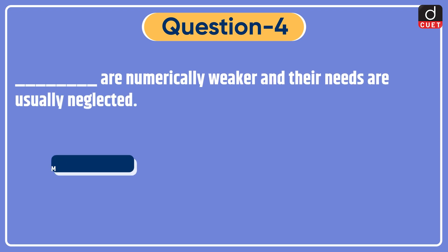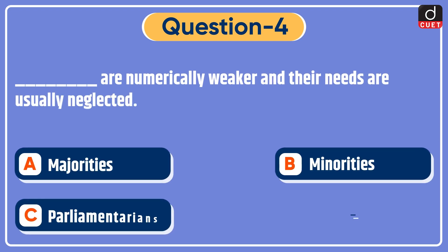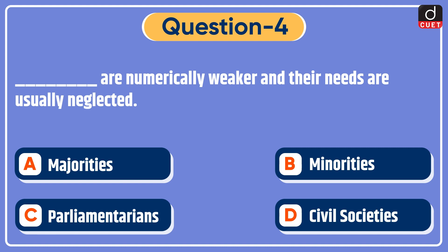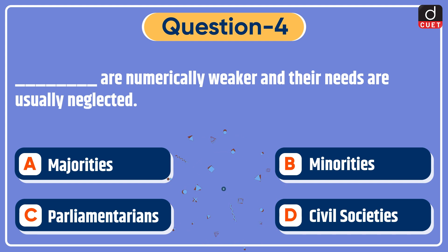Next question: dash are numerically weaker and their needs are usually neglected — Majorities, Minorities, Parliamentarians, or Civil Societies? The correct answer is option B, Minorities.